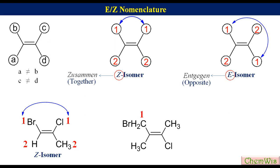On the right carbon, Cl is 1 and CH3 is 2. Since high priority groups are on the opposite side of the double bond, it is E-isomer.